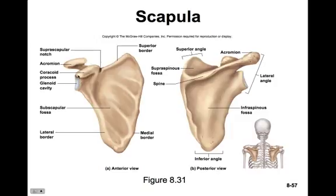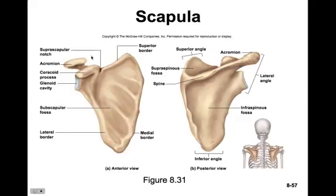Finally, there's the glenoid cavity — the slippery surface covered with cartilage that forms the socket of the ball and socket joint of the shoulder. It's pretty shallow and there's not a lot to hold the head of the humerus in this space. The rotator cuff is a series of muscles that go from the upper arm and attach to various points around this joint, and those are the primary forces that hold the upper arm in place.